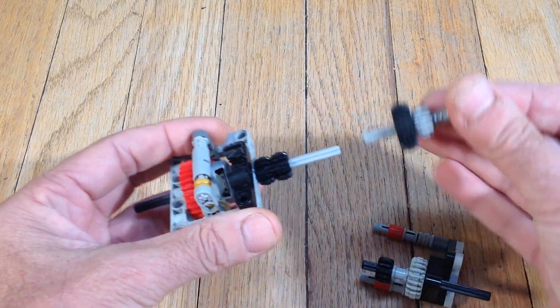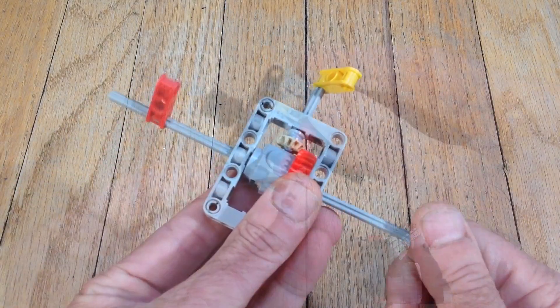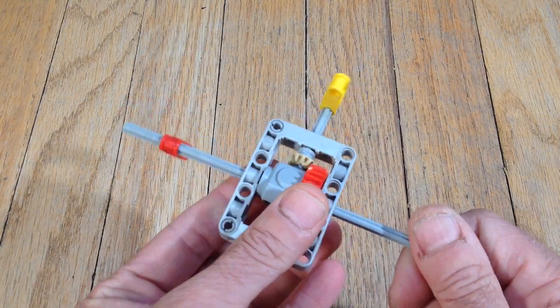Normally when you turn the axle on one side of a differential, the other side will turn, but if there's resistance on the output, the differential will try to spin.